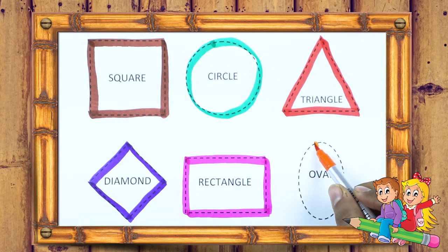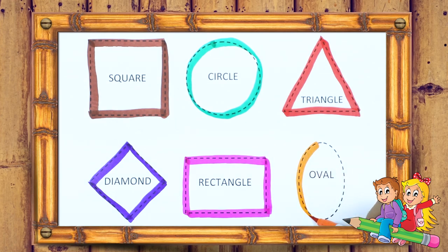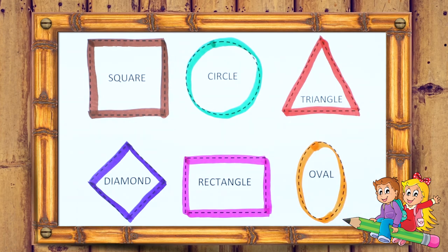Oval. We make oval with orange color. It's a oval.